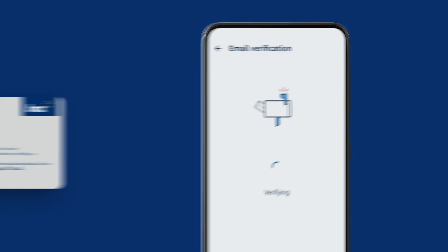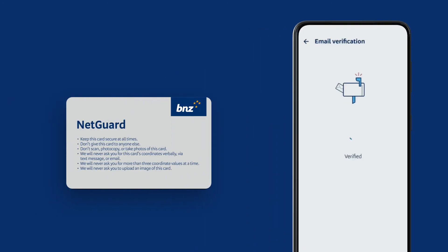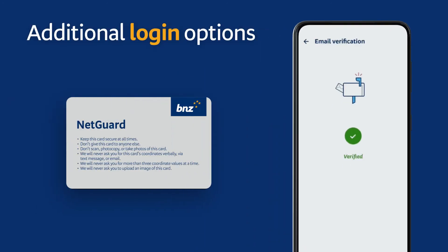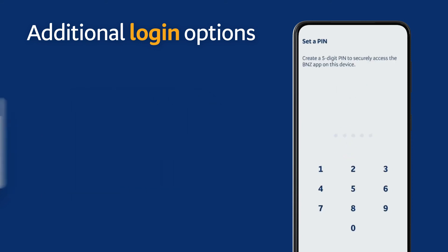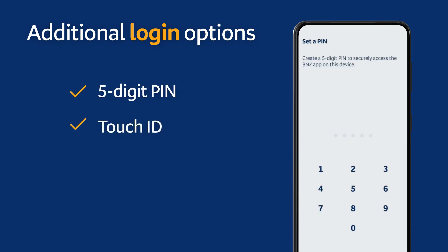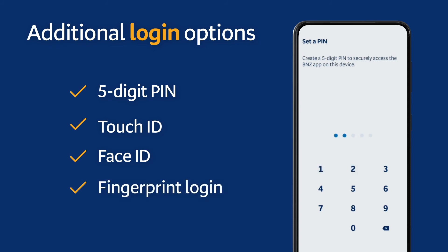If we don't have your email address and mobile phone number, you'll need to use your NetGuard card. From here, follow the prompt on your phone to set up additional secure login options, such as a five-digit PIN, Touch ID, Face ID, or fingerprint login.